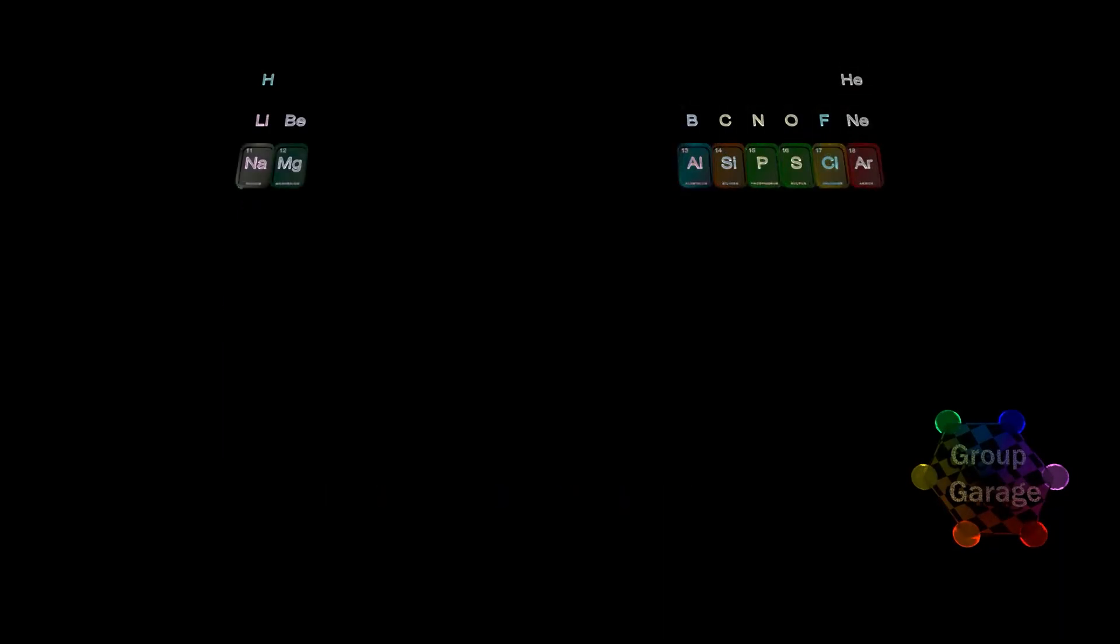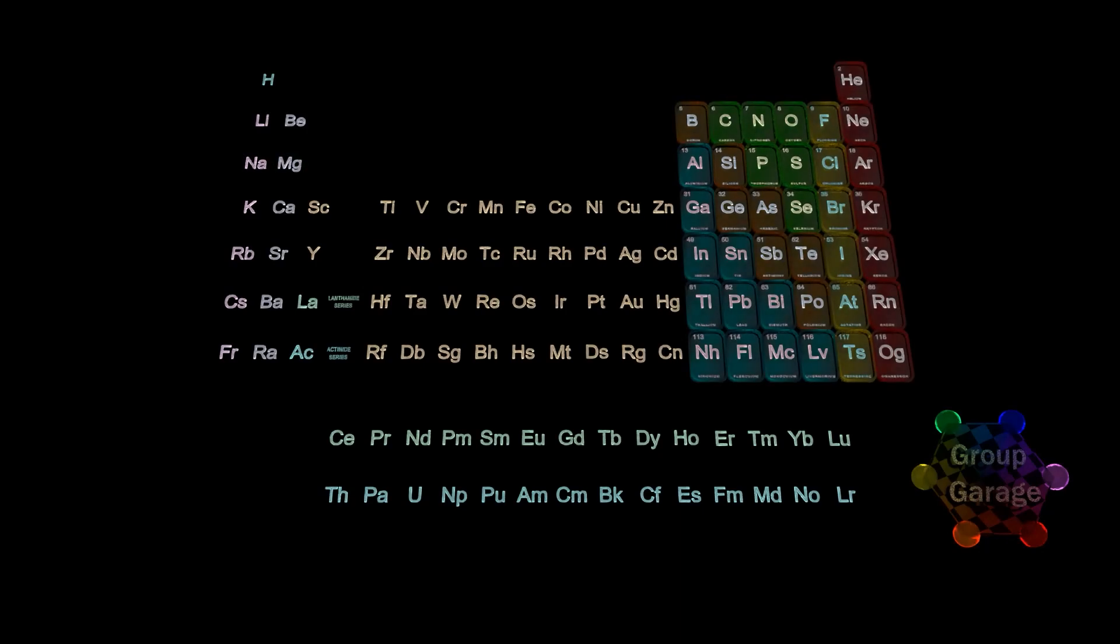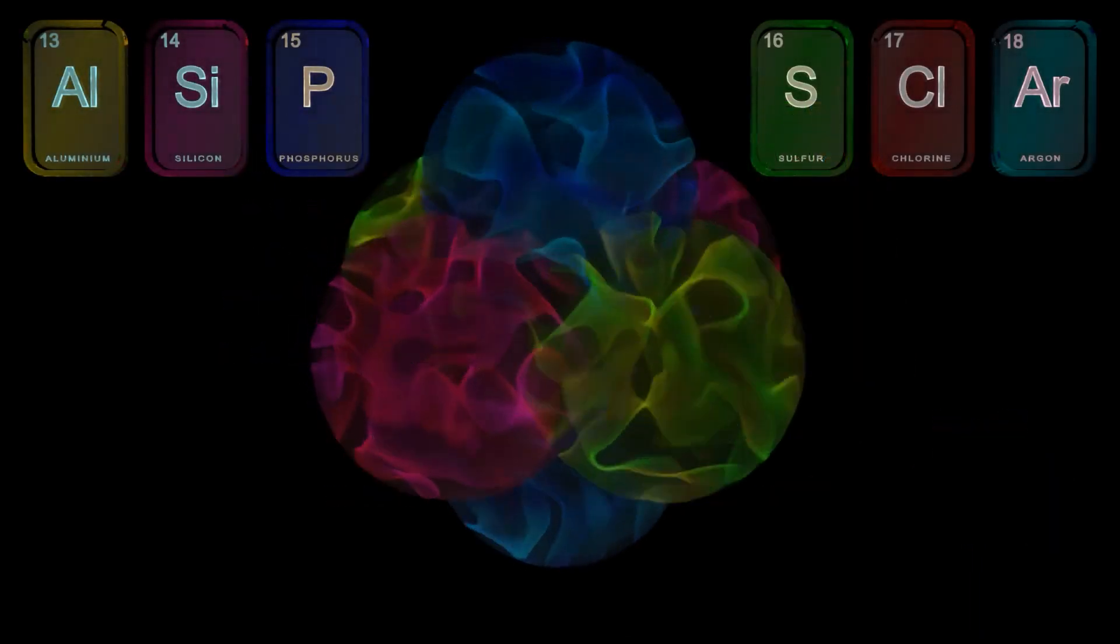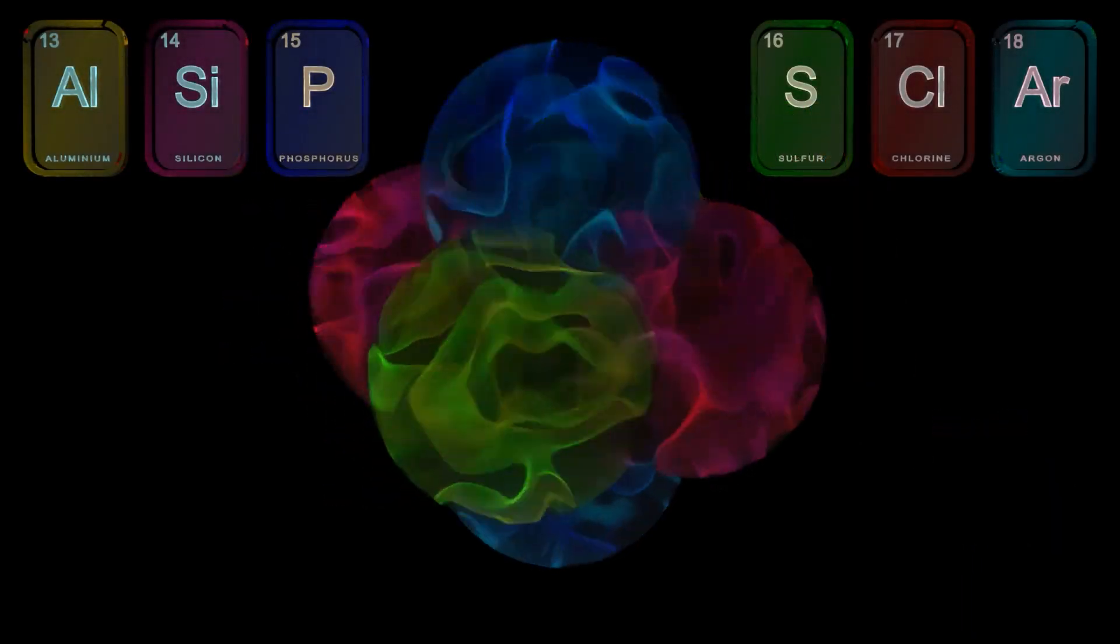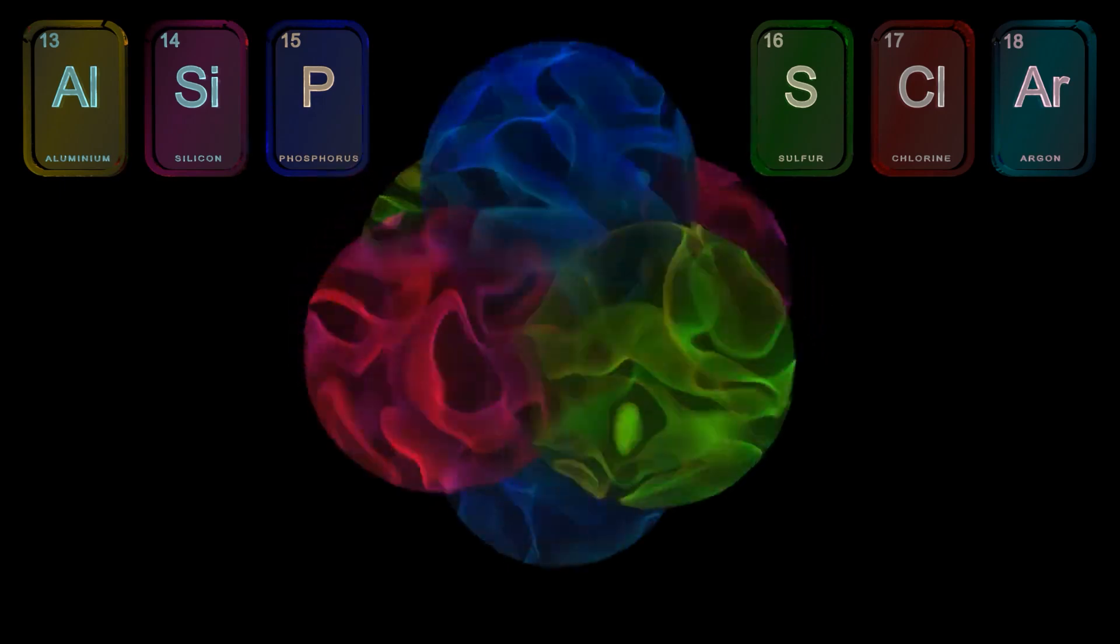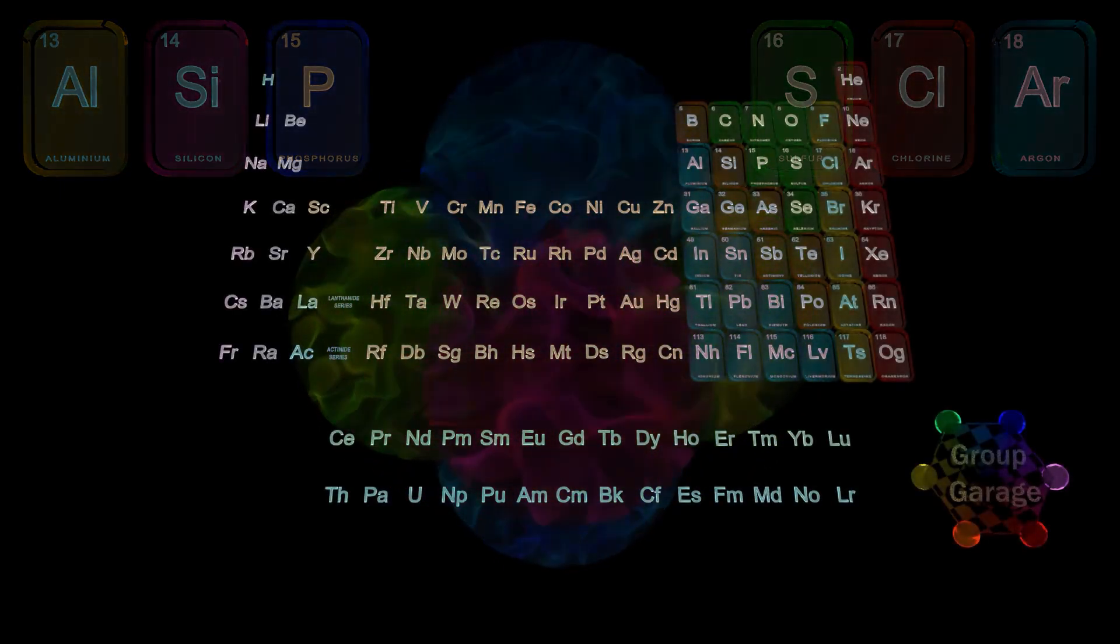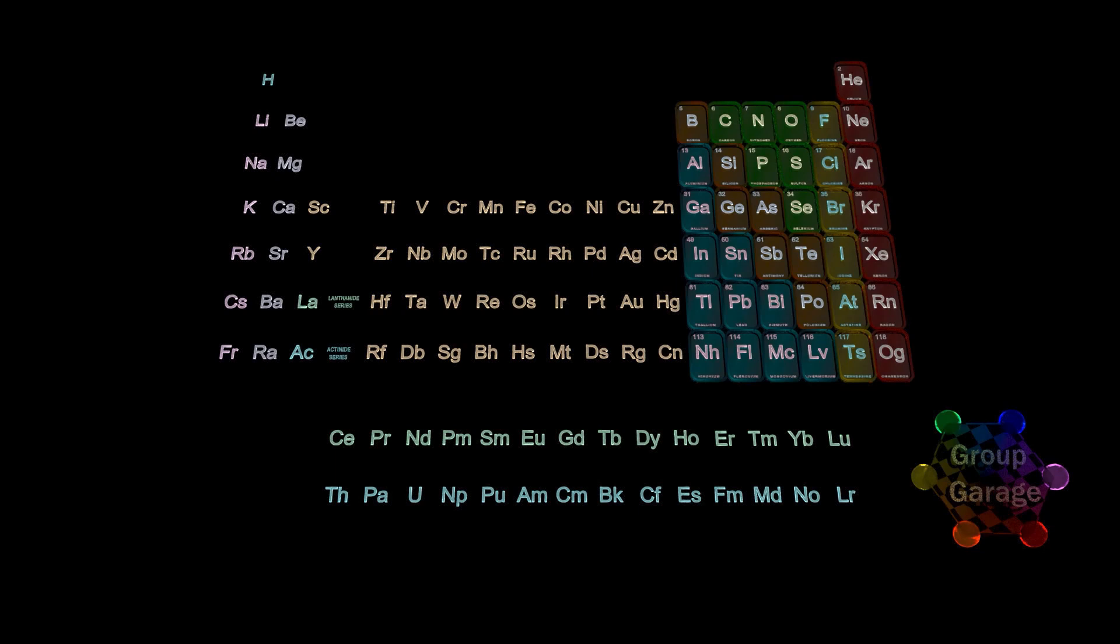Remember, each row is a principal energy level, and these six columns or groups on the right represent elements where electrons go into P orbitals. Hopefully from this video you've seen and it's been reinforced that the elements filling P shells are those in the six columns or groups on the right side of the periodic table, groups 13 through 18. And each energy level's P shell is just a similarly shaped larger shell as we build up the electron cloud.